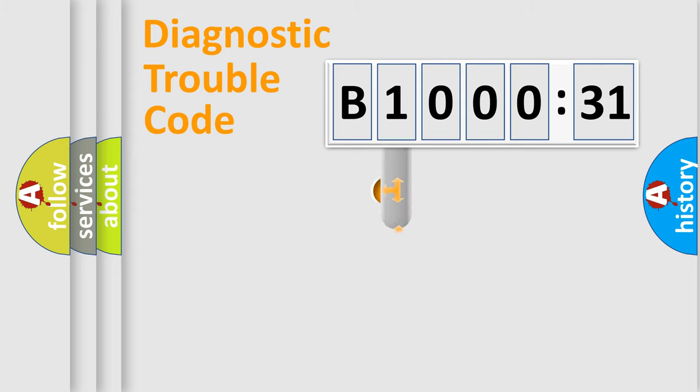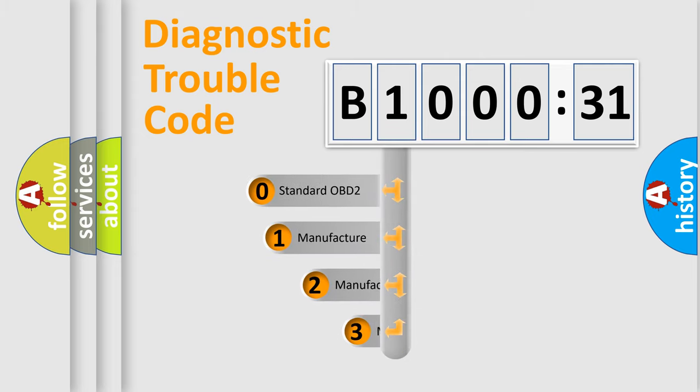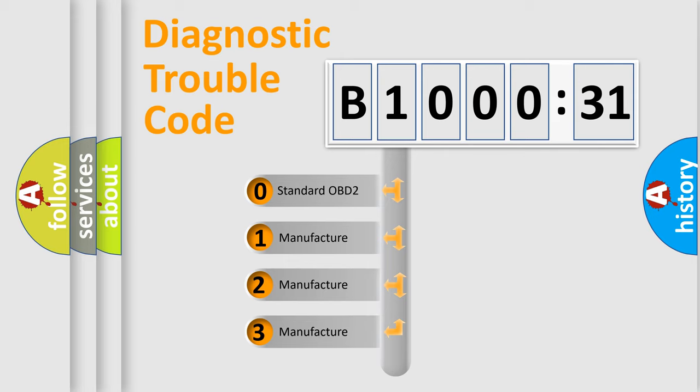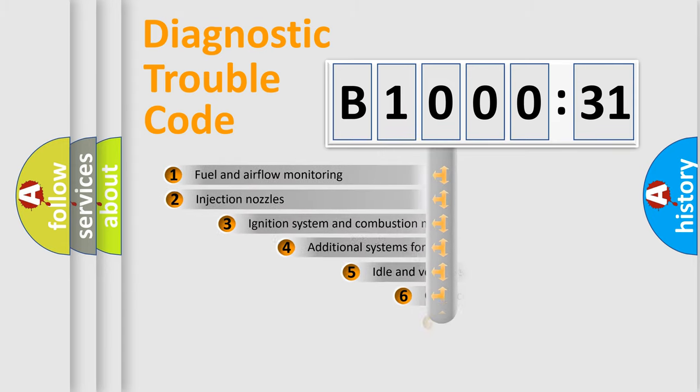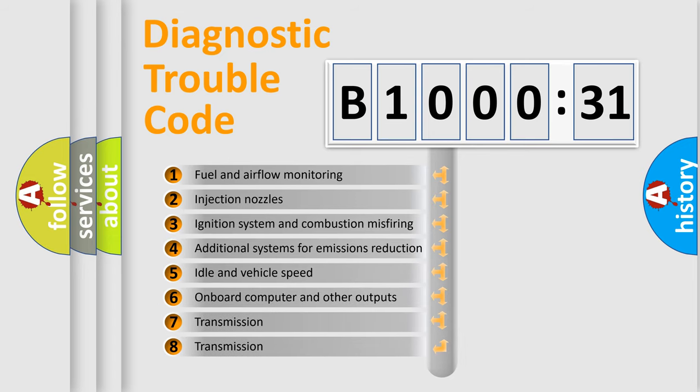This distribution is defined in the first character code. If the second character is expressed as zero, it is a standardized error. In the case of numbers 1, 2, or 3, it is a more specific expression of the car-specific error.